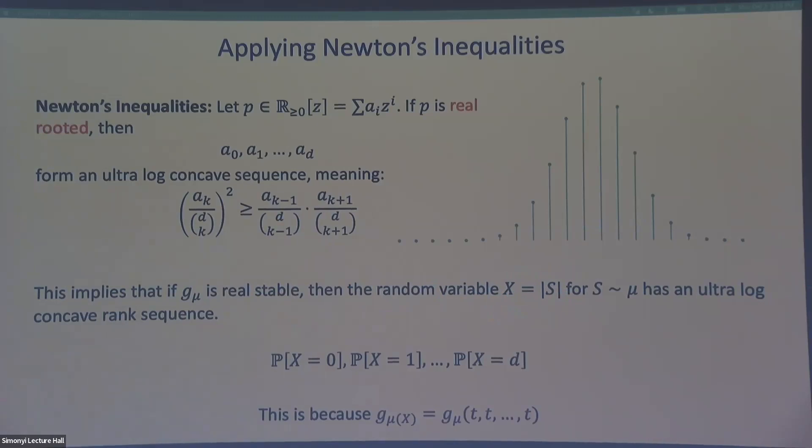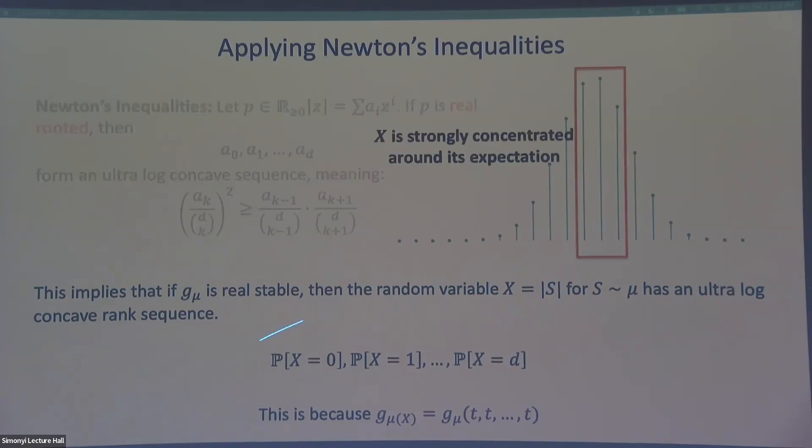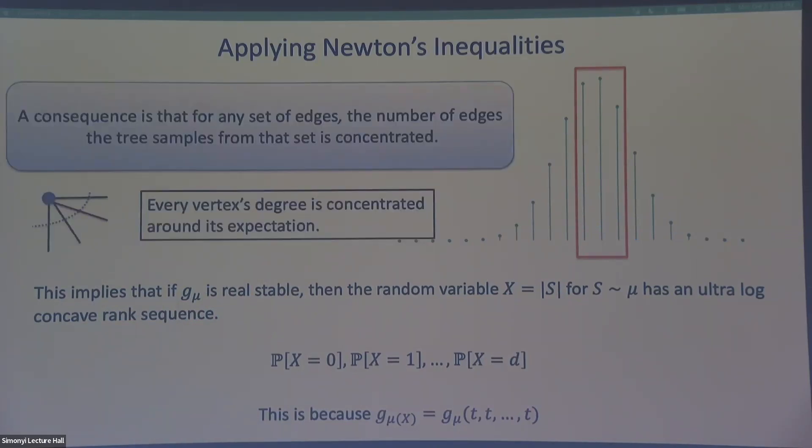But what this says is that if I have a distribution with a real stable generating polynomial, then it's very strongly concentrated around this expectation. And a consequence, maybe answering this question, is that if I take any set of edges in a distribution over spanning trees with this lambda uniform property, then the number of edges the tree actually samples from that set is highly concentrated. So if I, for example, if I look at the degree of a vertex, it's very likely close to the expected degree. And this is extremely useful in thinking about algorithms.